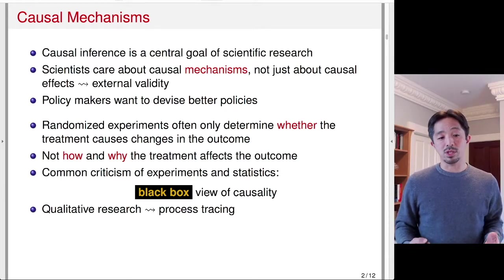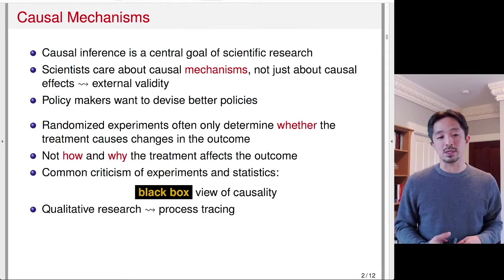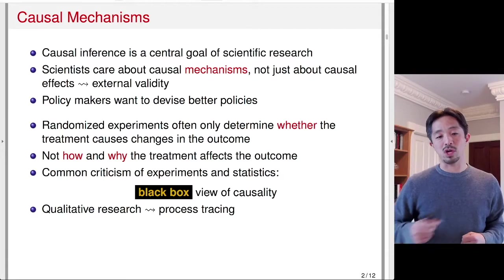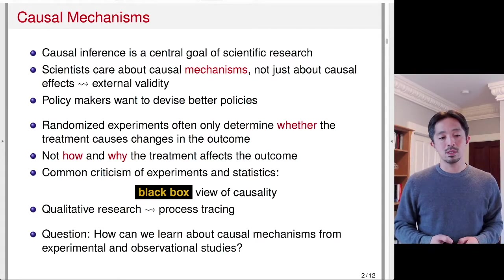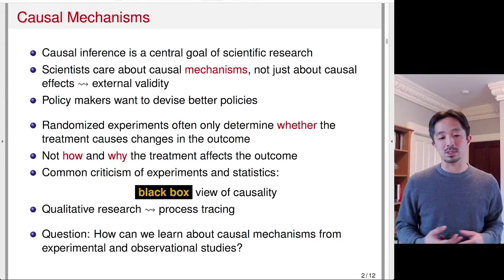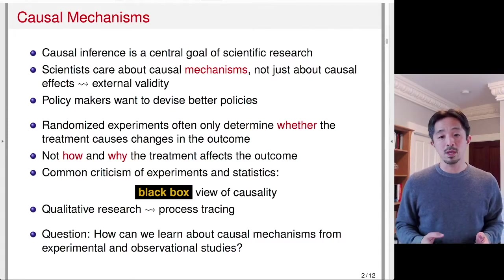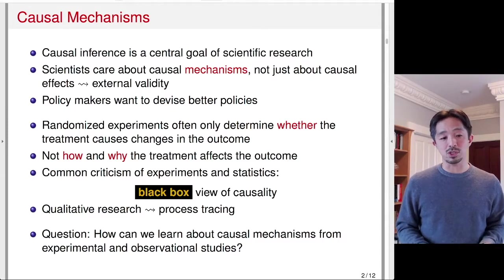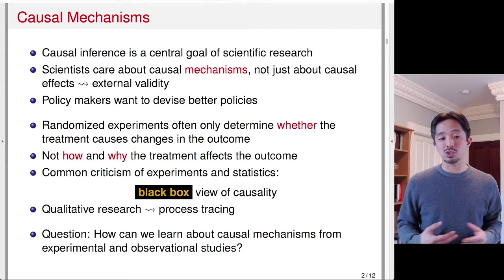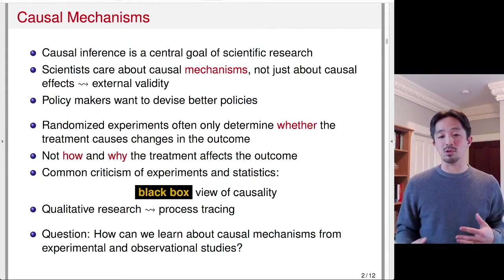In contrast, qualitative research may use the idea of process tracing — a detailed study of the sequence of events — trying to understand causal mechanisms. The question is how can we learn about causal mechanisms from experimental and observational studies using quantitative research? We're going to use a similar idea of process tracing, but used in statistics.